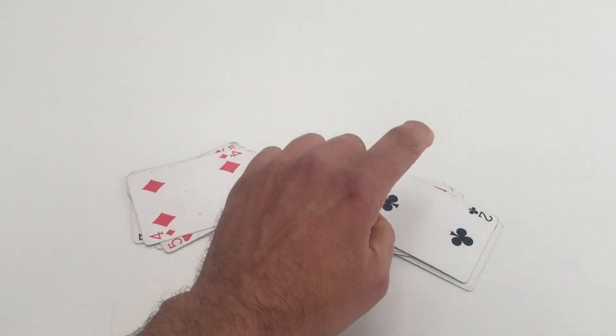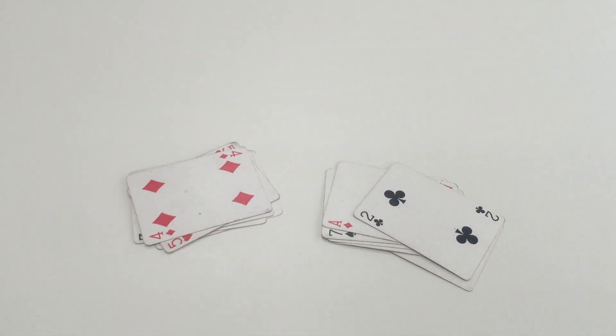So there'd be a six and an eight. Right, so there we go. Really nice, simple self-working card trick. Have a go and enjoy. Bye.